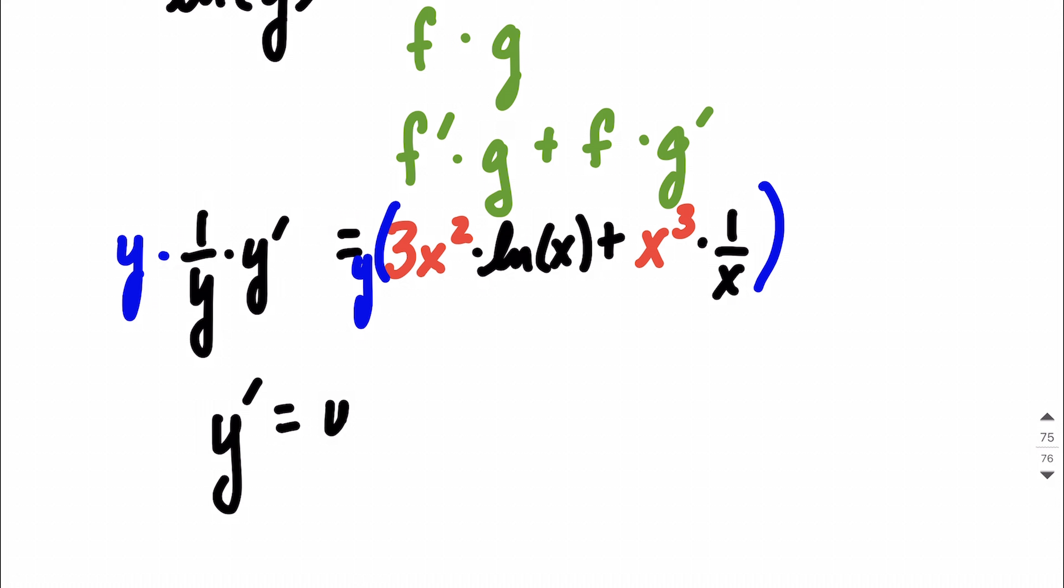leaving us with y times 3x squared times the natural log of x, plus we can do a little bit of simplifying down. We have x cubed multiplied by 1 over x. So that's like three copies of x in the numerator and one copy of x in the denominator. That will simplify to an x squared. So technically, that's our derivative.